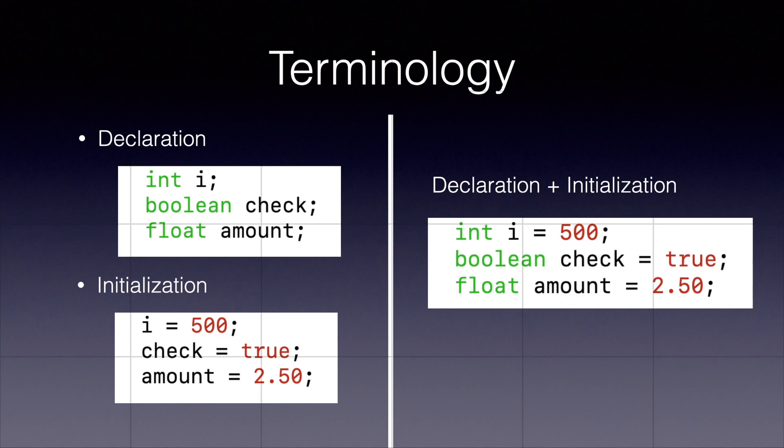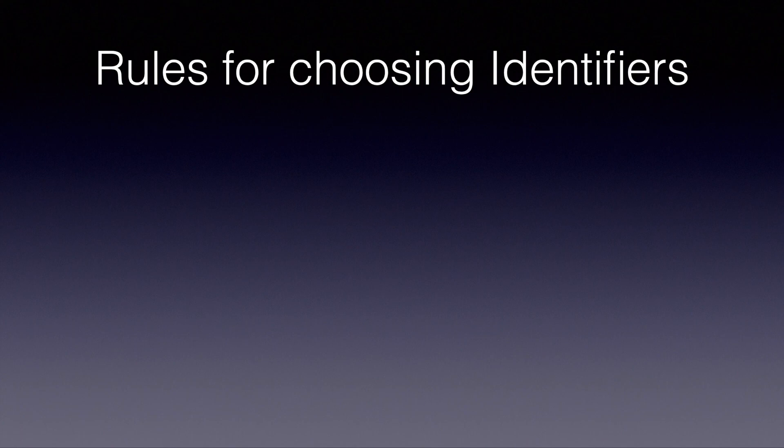Now let's look into the rules of choosing the names of the identifier. In the previous statement, we had a variable called i, and that variable i needs to follow some rules. There are in total four rules that we need to follow.